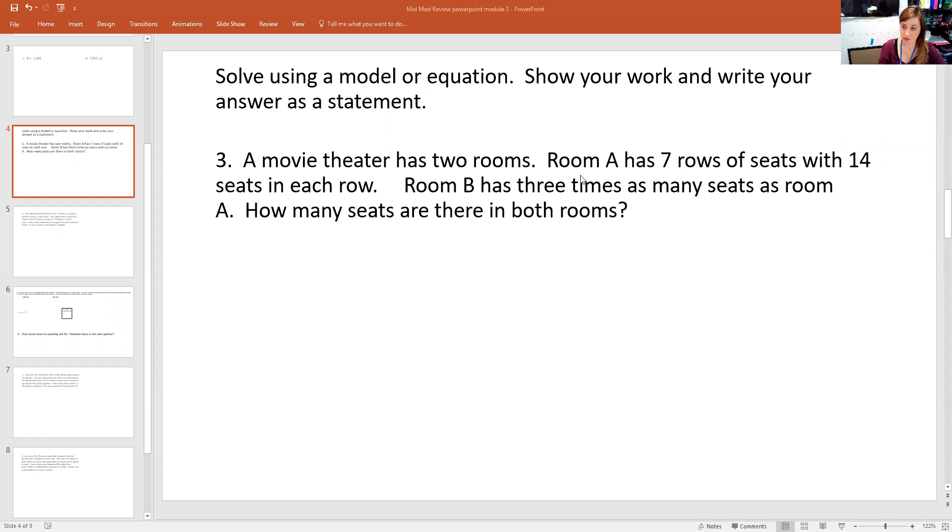A movie theater has two rooms. Room A has seven rows of seats with 14 seats in each row. Room B has three times as many seats as room A. How many seats are there in both rooms?